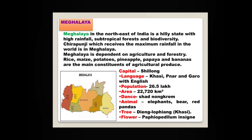Meghalaya, in the northeast of India, is a hilly state with high rainfall, subtropical forests and biodiversity. Cherrapunji, which receives the maximum rainfall in the world, is in Meghalaya. Meghalaya is dependent on agriculture and forestry. Rice, maize, potatoes, pineapple, papaya and bananas are the main constituents of agricultural produce. The capital of Meghalaya is Shillong.